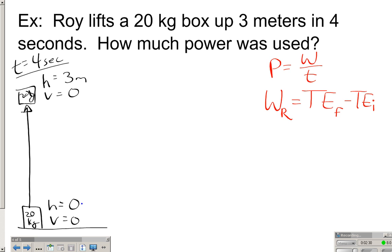So here we go. Since the height at the bottom is zero, that means that the GPE at the bottom is zero. Since the velocity at the bottom is zero, that means that the KE at the bottom is zero. And therefore, our total energy that our box has got before Roy lifted it is exactly zero joules. Then he lifts it. So when he gets it up to here to a height of three meters, now it's going to have some GPE.